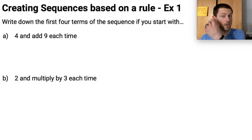So let's talk about just creating sequences. If it's a list of numbers that are following a rule, we need a rule. So let's write down the first four terms of the sequence, and we've got two different scenarios here. We're going to start with 4, and we're going to add 9 each time. So we want the first four terms.